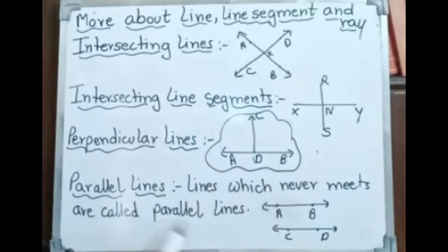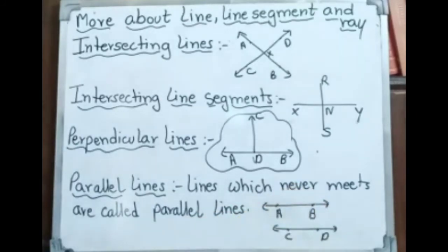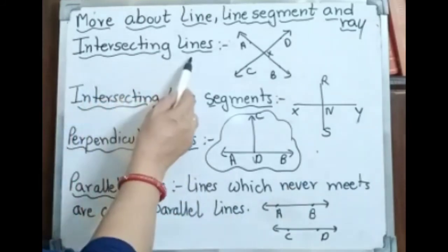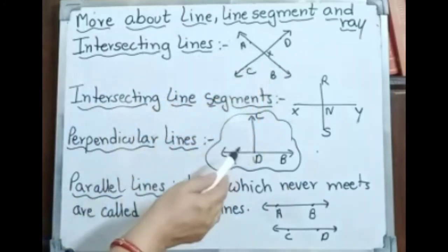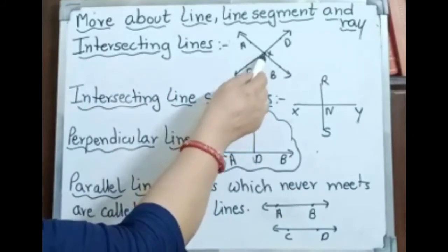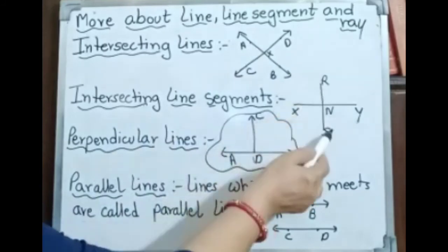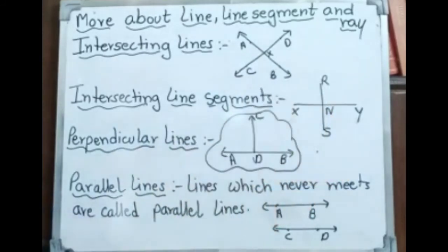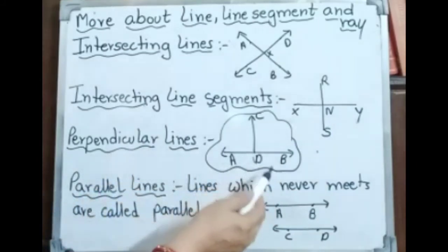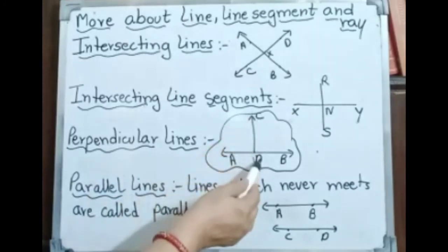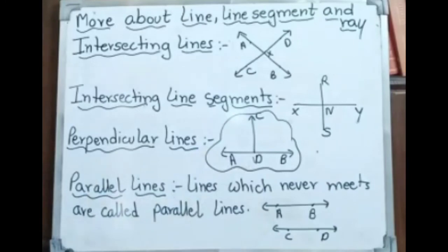Parallel lines: lines which never meet are called parallel lines. AB and CD are parallel lines. They are always at an equal distance from each other and they never meet. To recap: AB and CD are intersecting lines crossing at point X; RS and XY are line segments crossing at point N; perpendicular lines form when a vertical ray, line, or line segment meets a horizontal one; parallel lines never meet and are always at an equal distance from each other.